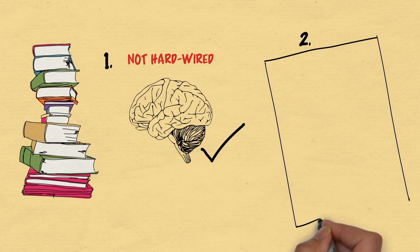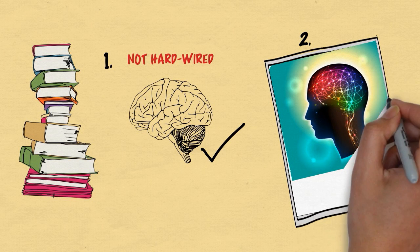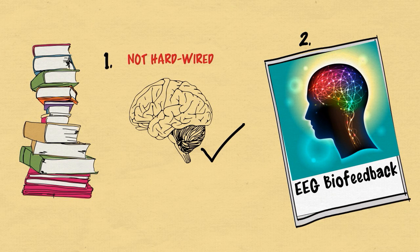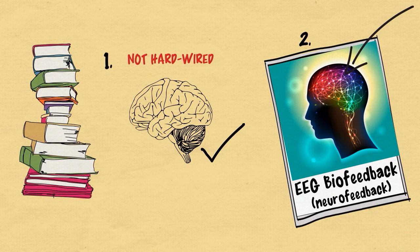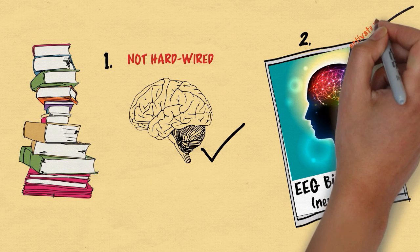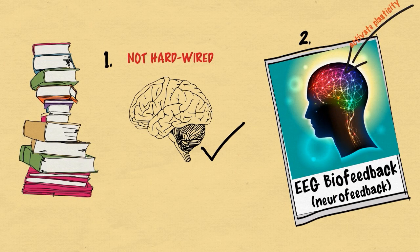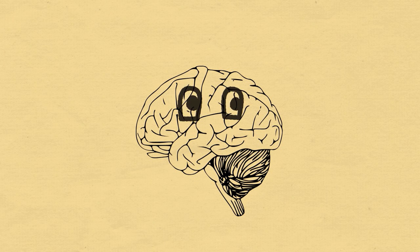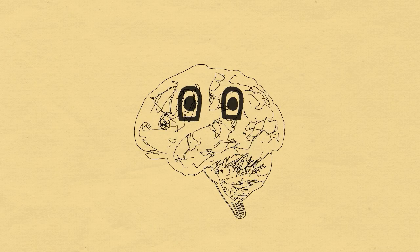The second learning was that EEG biofeedback, or sometimes called neurofeedback, is a technology that uses information about the brain's electrical activity to activate the brain's plasticity. With this technology, the brain is able to become aware of what it's doing and then make changes to function more efficiently and more effectively.